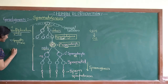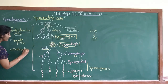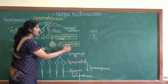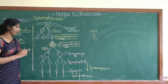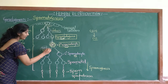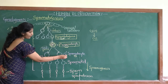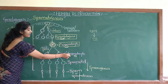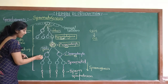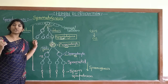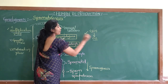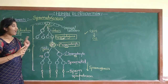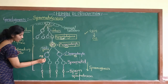The third phase is called the maturation phase. In the maturation phase, the primary spermatocyte undergoes the first meiotic division, forming the secondary spermatocyte. This first meiotic division is a reductional division, meaning the diploid (2n) is reduced to haploid (n). Now the secondary spermatocytes undergo the second meiotic division, but here the division is not a reductional division.